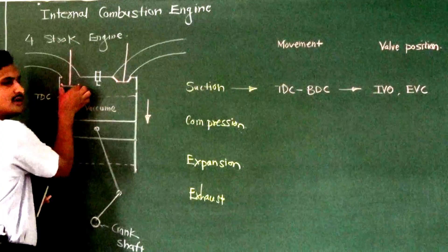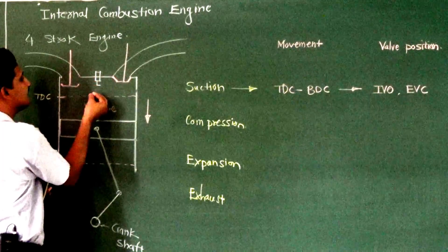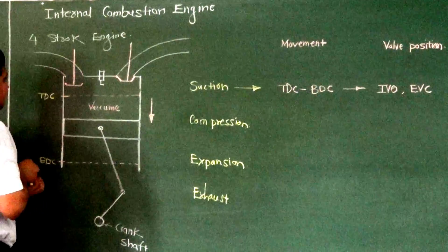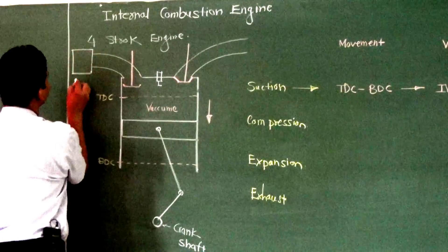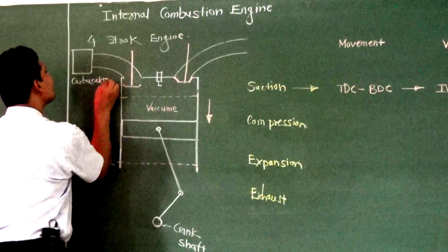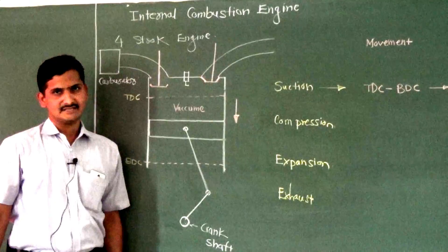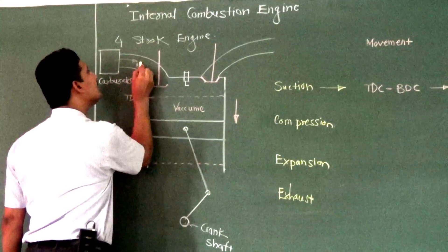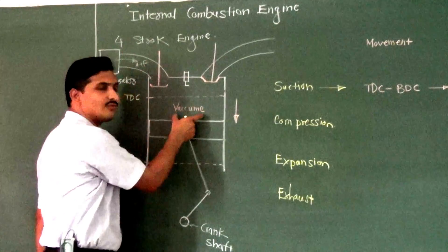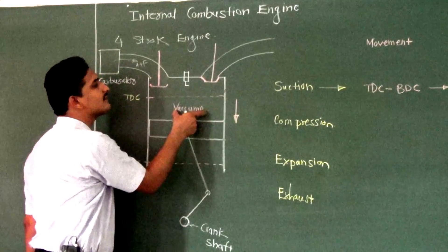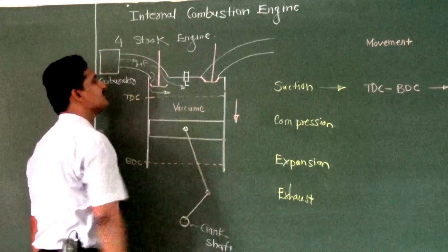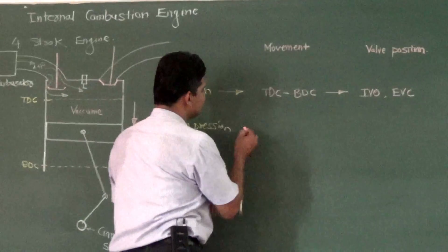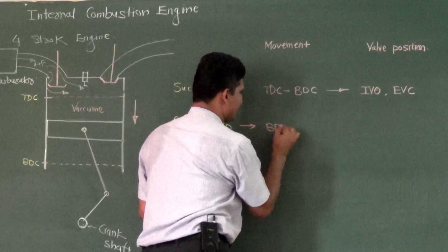Since the inlet valve is open, vacuum draws in the mixture. For a petrol engine, there will be a carburetor which mixes air and fuel together. That air-plus-fuel mixture prepared by the carburetor is sucked into the cylinder by the piston-cylinder arrangement because vacuum is generated. So air plus fuel enters into the system during the suction stroke. At the end of the suction process, the piston is at BDC.